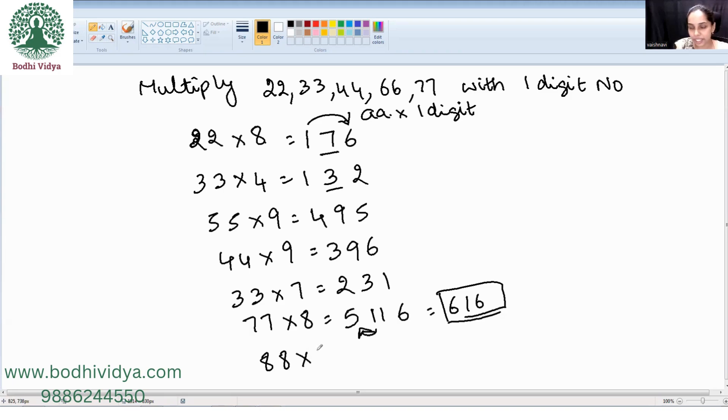88 into 4. 8 times 4 is 32. 3 plus 2 is 5. Final answer is 352. Hope this is useful for you. Thanks for watching.